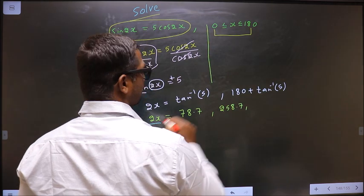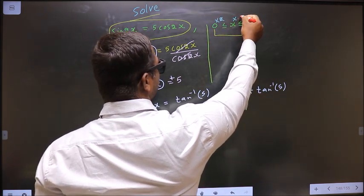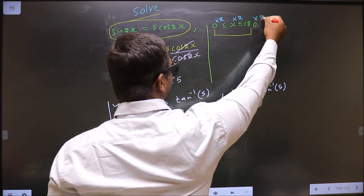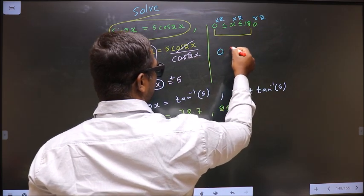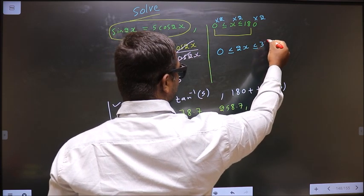Here we have 2x. So, to get 2x, you multiply by 2 throughout. So, we get 0 less than or equal to 2x less than or equal to 360.